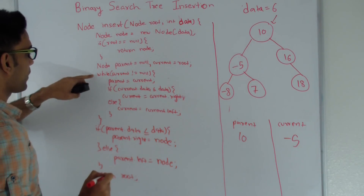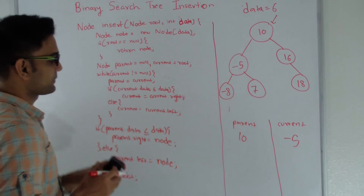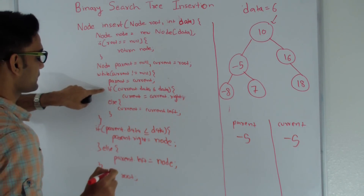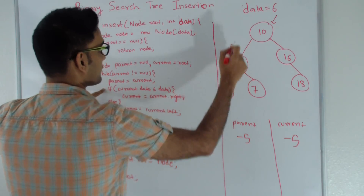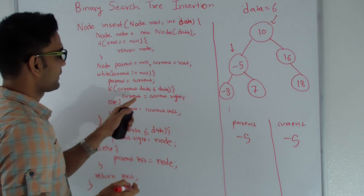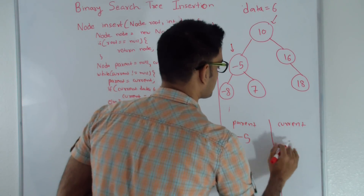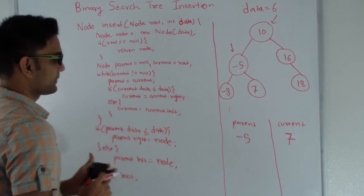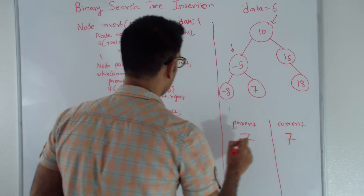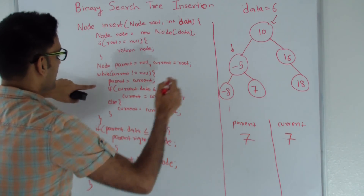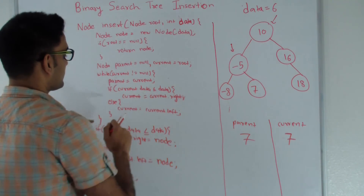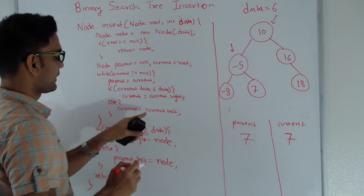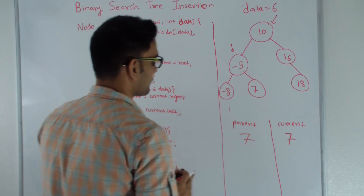We go back to the top of the while loop. Current is not null, so parent becomes current — parent becomes minus 5. We check if current data is less than or equal to data: minus 5 is less than 6, so current becomes current's right, which is 7. Back at the top of the loop, current is not null, so parent becomes 7. We check if 7 is less than or equal to 6 — it's not, so we go into the else condition and set current to current's left. Since 7 has no left child, current becomes null.